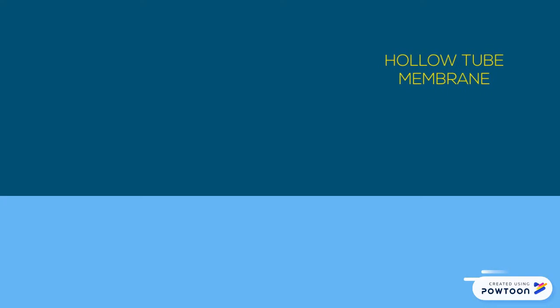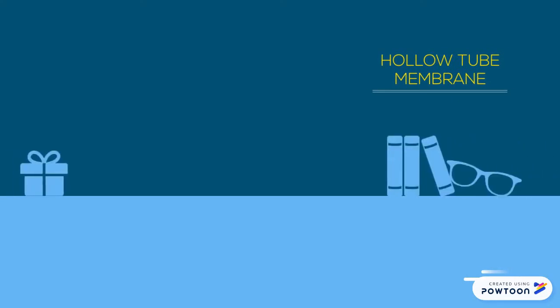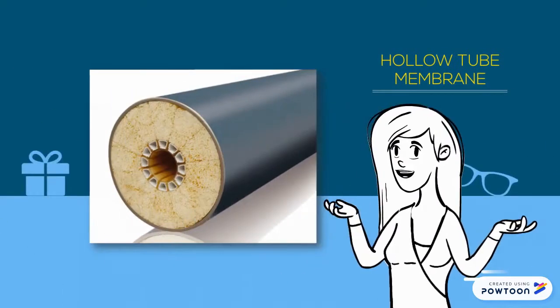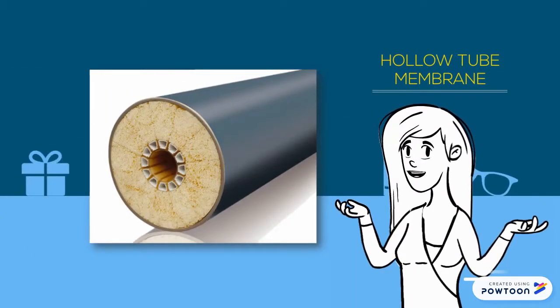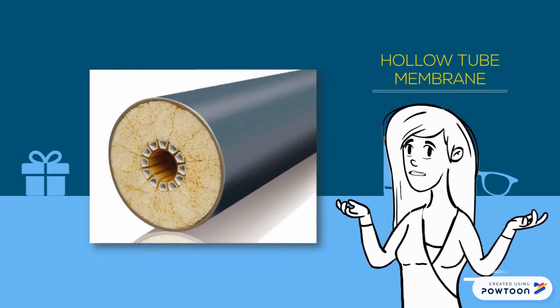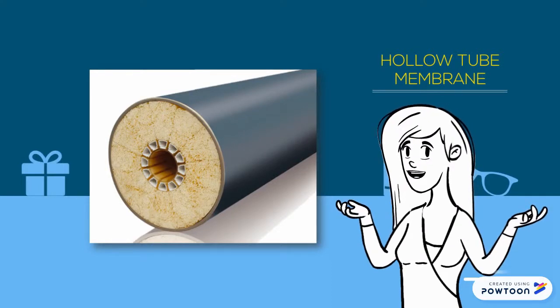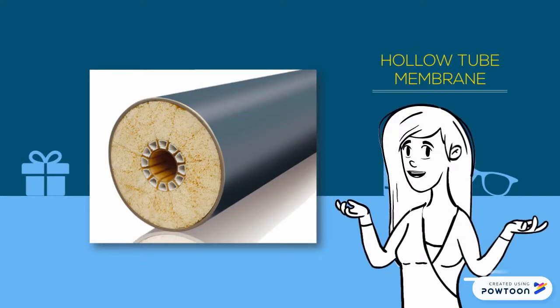Hollow fiber membrane utilizes thousands of long porous filaments ranging from 1 to 3.5 millimeters wide that are potted in place in a PVC shell.